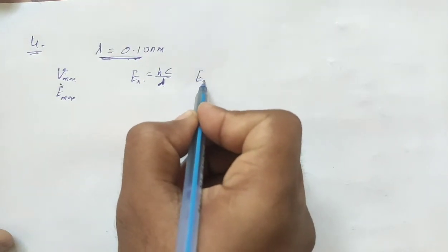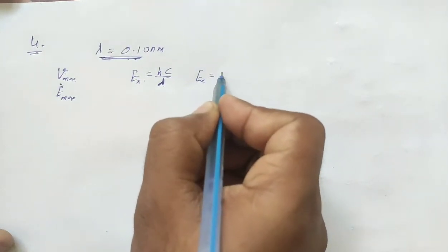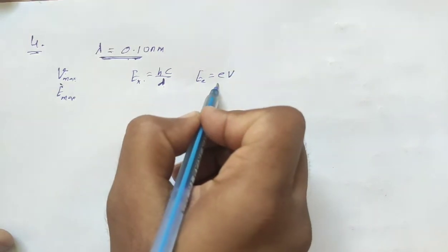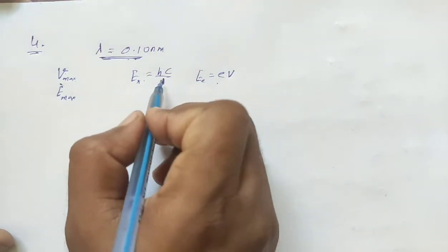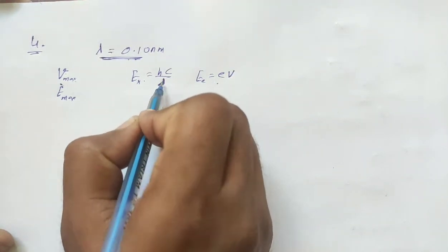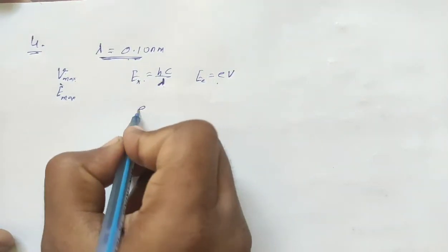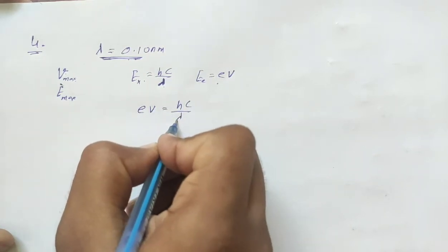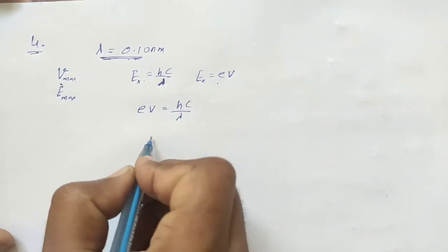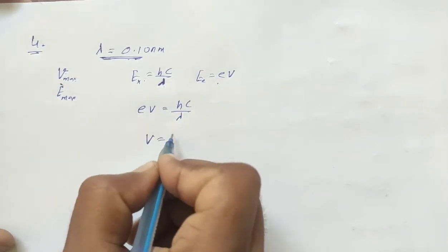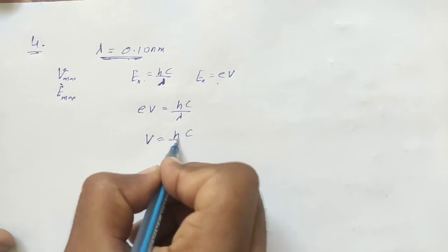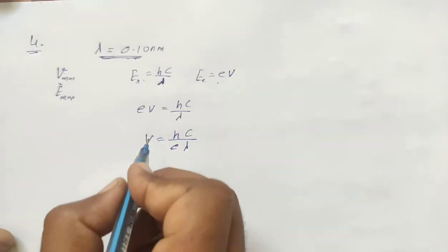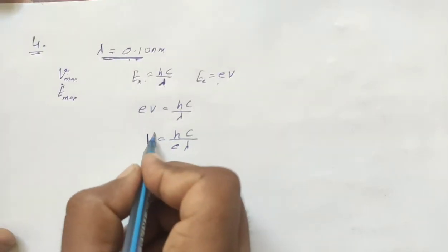The electron's energy is e into V. Since this electron's energy is converted into X-ray energy, I can write: e × V = hc/λ. Therefore, V = hc/(e × λ). This gives us the potential.